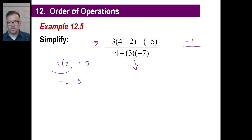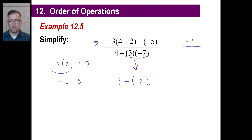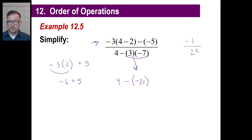Let's do the denominator. 4 times 3 times negative 7 — let's do that part first. What is 3 times negative 7? Negative 21. You can write it with parentheses. Then 4 minus negative 21 is the same thing as 4 plus 21, which is 25. A negative divided by a positive is a negative, so you can apply that to the entire fraction.